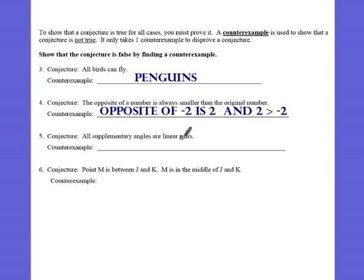All supplementary angles are linear pairs. Your counterexample, especially in this class, does not always need to be written words. You could actually draw something and say, hey, wait a sec. If I have these angles, those are supplementary. They add to 180, but they're not a linear pair. They're not even adjacent. So that's a counterexample there.